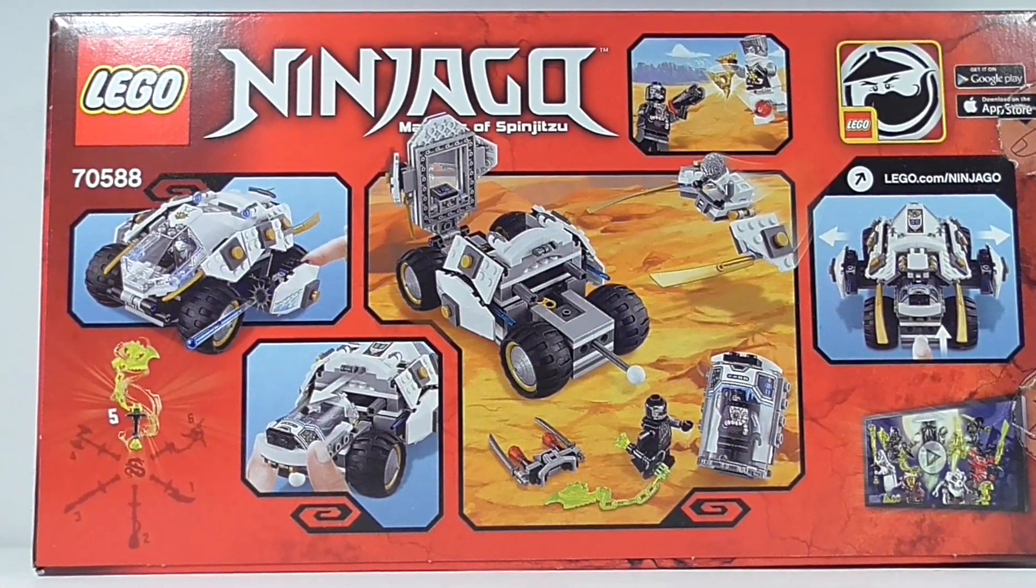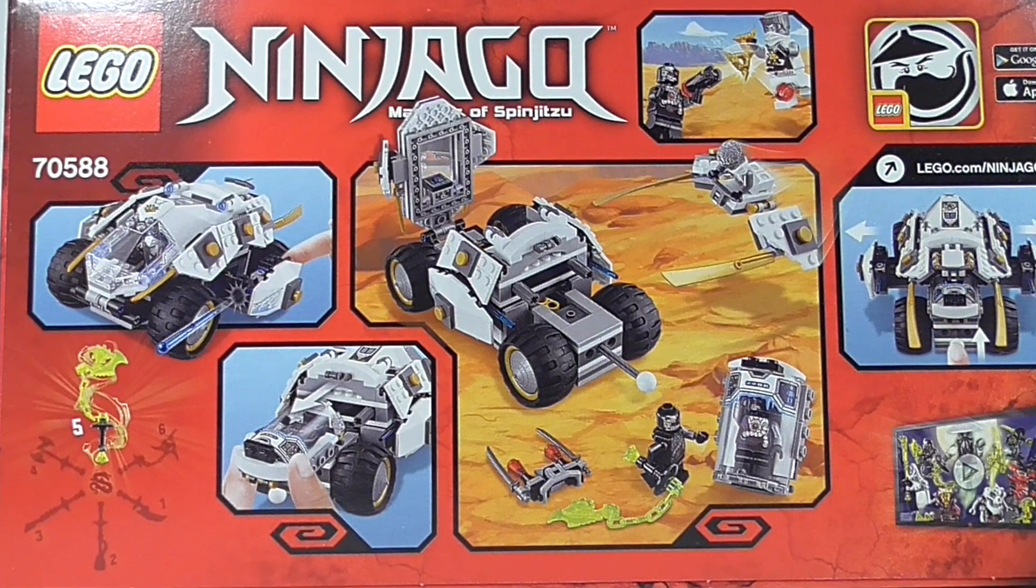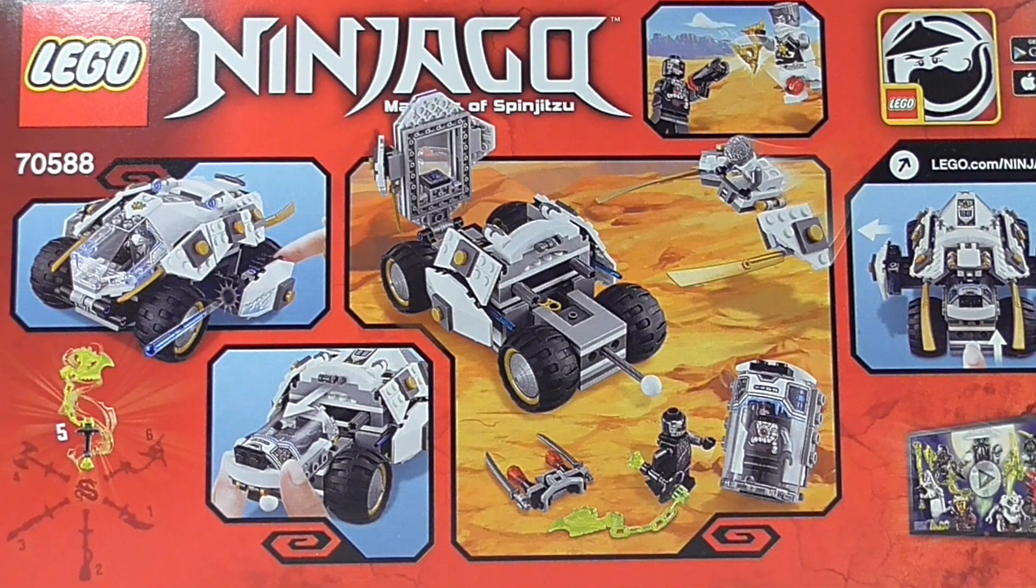And then on the back of the box there we can see this includes the fifth collectible, this is the Technoblade. And then we can see all of the features of the set, and of course the new WooCrew app which is coming soon.